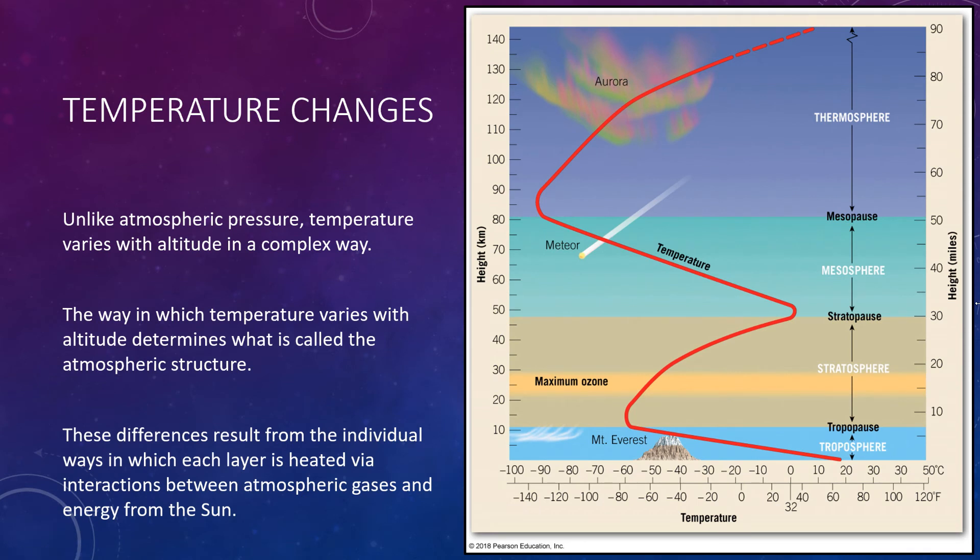By the early 20th century, much had been learned about the lower atmosphere. The upper atmosphere was partly known from indirect methods. Data from balloons and kites showed that near Earth's surface, air temperature drops with increasing height. This phenomenon is felt by anyone who has climbed a high mountain and is obvious in pictures of snow-capped mountain ranges rising above snow-free lowlands. Unlike atmospheric pressure, though, temperature varies with altitude in a fairly complex way. The way in which temperature varies with altitude determines what is often called the atmospheric structure. These differences result from the individual ways in which each layer is heated. The key to understanding atmospheric structure lies in the interactions between atmospheric gases and energy from the sun.